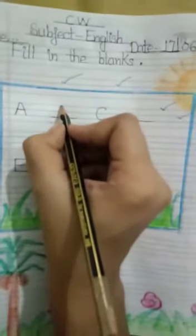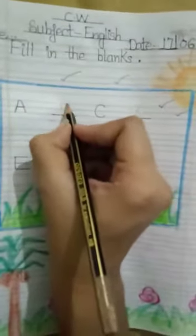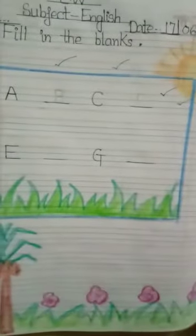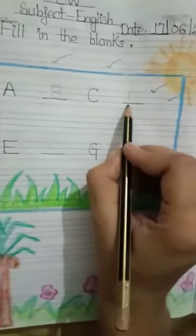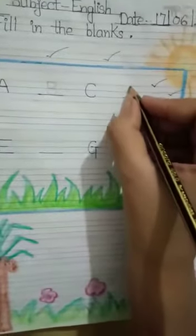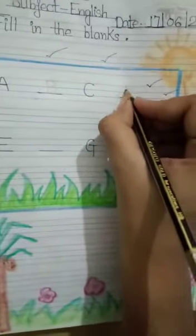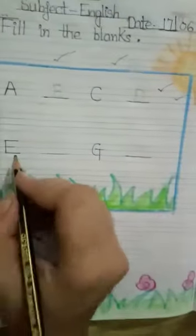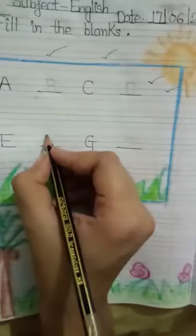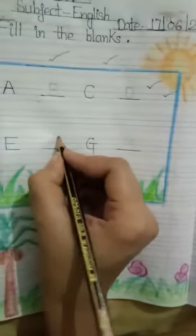After B, you have to draw B like this. A, B, C — here we will draw D. Okay, E, F — you have to draw F like this. F for fish.